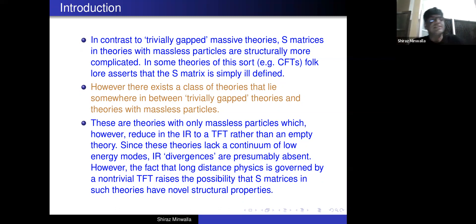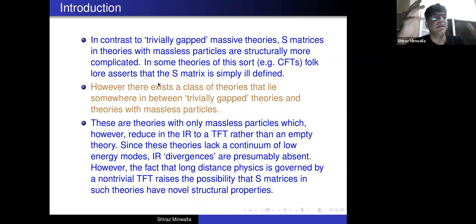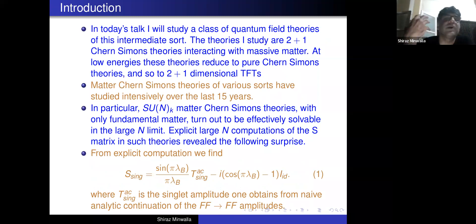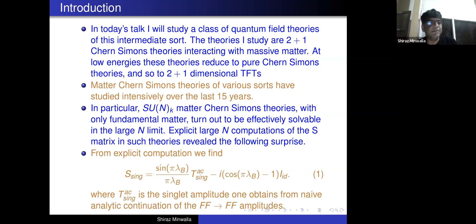Since the very long distance physics of these theories is governed by topological field theory, you might expect their S-matrices to differ from genuinely gapped counterparts. However, since there is no continuum of low-energy states going down to the vacuum, you might hope that the pathologies of S-matrices appearing in conformal field theories are absent. This looks like a good place to study theories with interesting IR physics but hopefully without pathologies. In today's talk I will study quantum field theories of this intermediate sort — theories in 2+1 dimensions consisting of Chern-Simons theories coupled to massive matter.